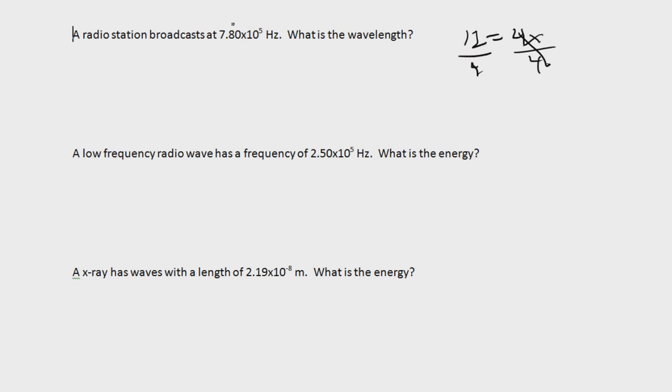So our first one says, a radio station broadcasts at 7.80 times 10 to the 5th hertz. What is the wavelength? So what is it giving us? Well, it's giving us something in hertz. And as we already know, hertz measures frequency, and it's asking for wavelength. So what equation has both frequency and wavelength? The answer, of course, is C equals lambda times frequency.